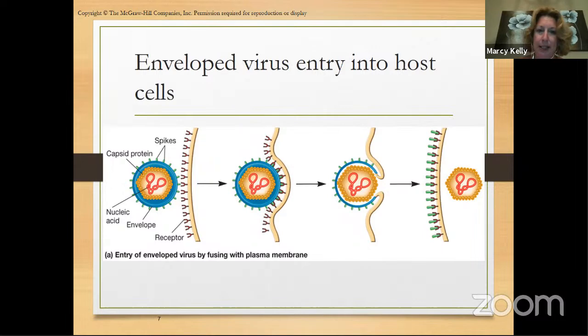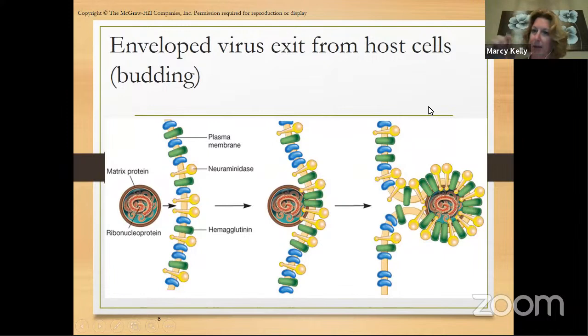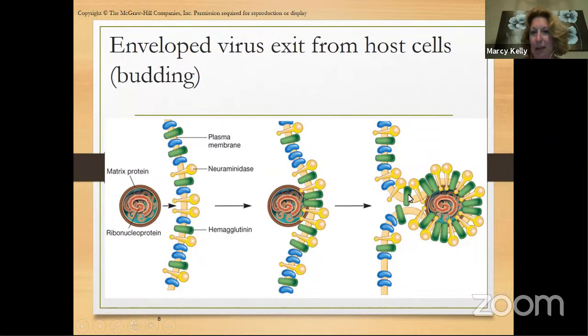This picture shows how the virus exits and ends up with that envelope — the outer layer. The virus migrates toward the cell membrane, pushes against it, eventually leading to a bulge, and then pops out, taking part of the host cell membrane with it, and then sticks its spike proteins in there.